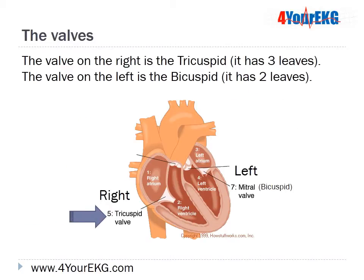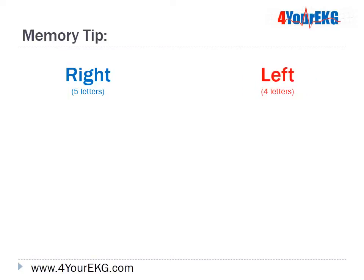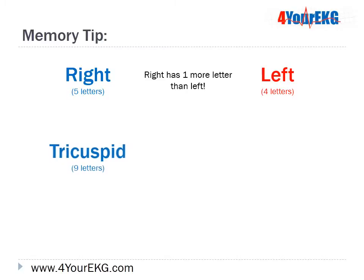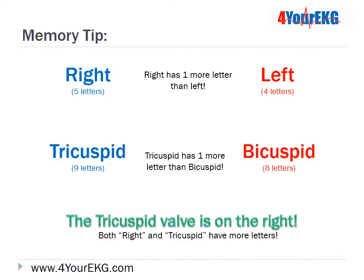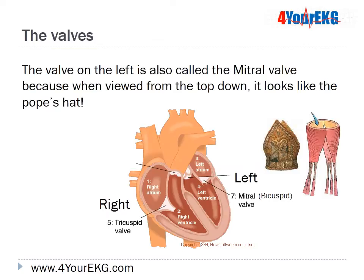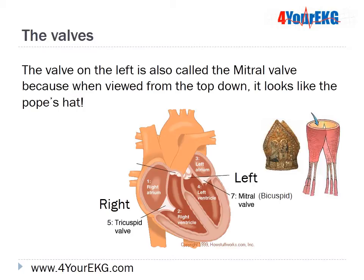The valve on the right side is the tricuspid valve — it's called that because it has three leaves. The valve on the left is called the bicuspid valve because it has two leaves. To remember this: the word 'right' has five letters and 'left' has four; 'tricuspid' has nine letters and 'bicuspid' has eight — so tricuspid is on the right because both have more letters. The valve on the left is also called the mitral valve because when viewed from the top down, it looks like the Pope's hat.